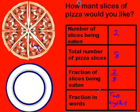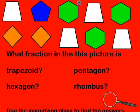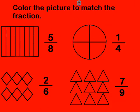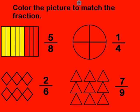Let's look at this. Color to match the fraction. So five out of eight, I have to color five of these rectangles. One, two, three, four, five, that's five eighths. Next one, two out of six. One, two, that's two out of six. And seven ninths. That's it.